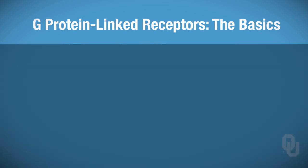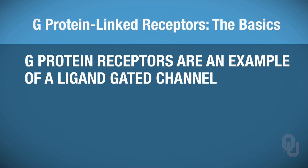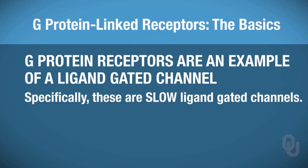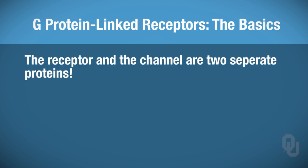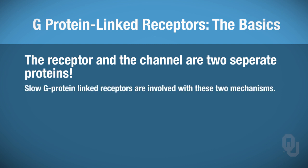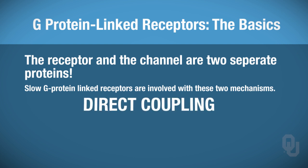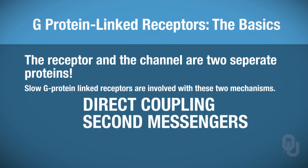G-protein-linked receptors are an example of a ligand-gated channel—slow ligand-gated channels. Because they're slow, the receptor and the channel are two separate proteins. Slow G-protein-linked receptors are involved with two mechanisms: direct coupling and second messenger systems. We'll be discussing each of these.